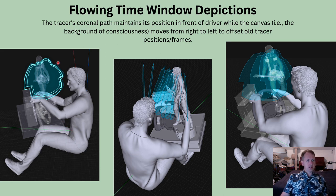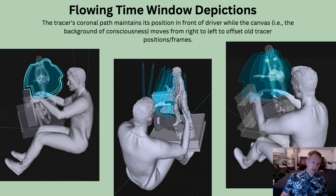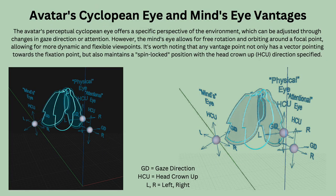This depicts the flowing time window — the real-world schema depicted by the driver, the imagination schema depicted by mental imagery of Cobain playing as the driver listens to music, and rings selected from the bank schema. The central-most ring has a tracer constantly tracing it out, and the canvas it's printing on moves to the left or right, kicking out old rings and bringing in future look-ahead regions — a continually flowing time window.